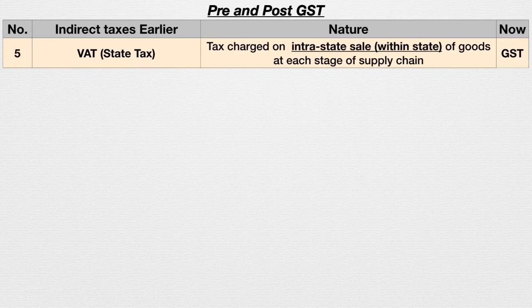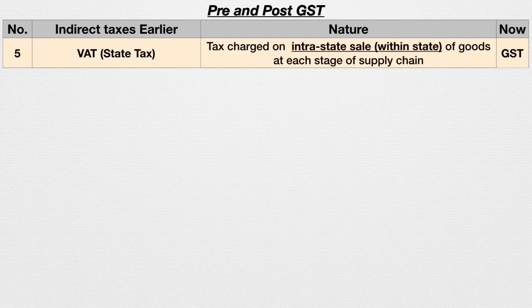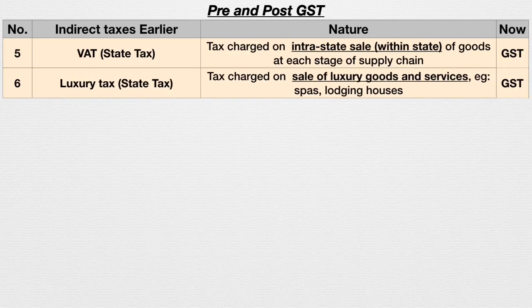Fifth is VAT — a state tax collected by the state government. It is a tax charged on intrastate sale, that is within-state sale of goods, at each stage of the supply chain. A seller would recover VAT from his buyer or customer and then pay it to the state government. Now it has got replaced with GST.